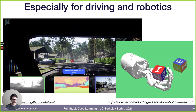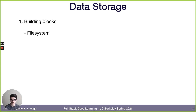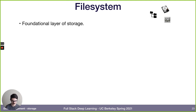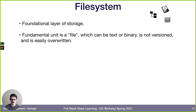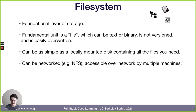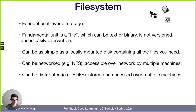Next, let's talk about storage. The file system is the foundational layer of storing data. The unit is a file - text or binary - which is not versioned and can be easily overwritten or deleted. Storage can be local (plugging in a hard drive), networked like NFS (same drive accessed from different machines), or distributed like the Hadoop file system (stored and accessed across multiple machines). The file system in general is the fastest storage option we have.